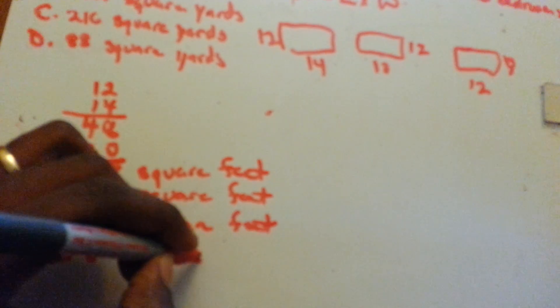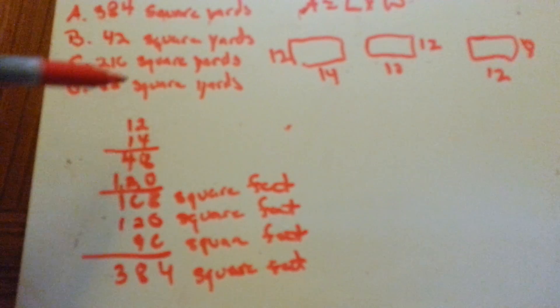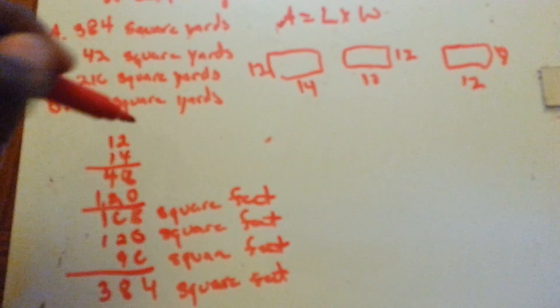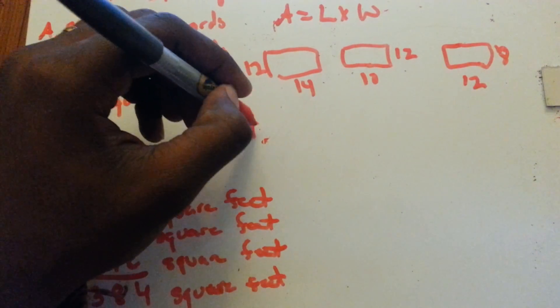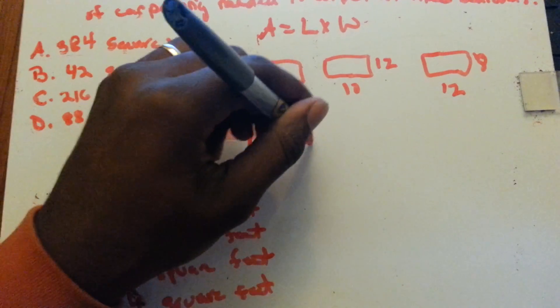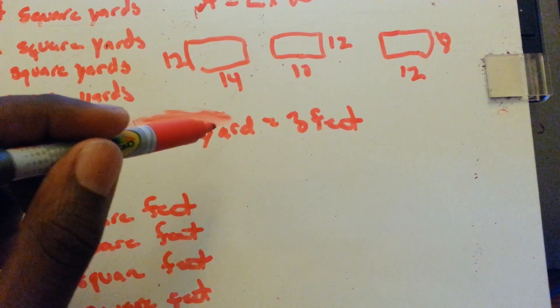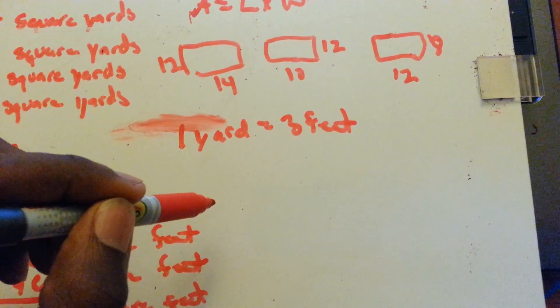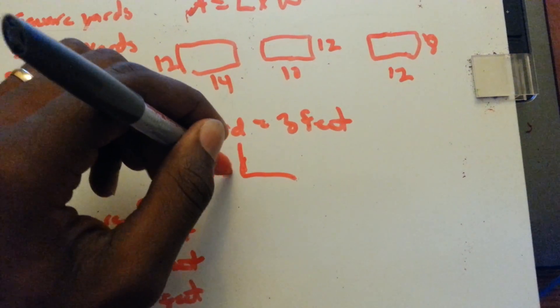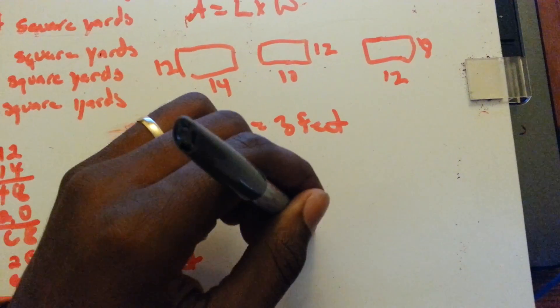Now, we have square feet, and like I said, the answers are in square yards. To get from square feet to square yards, one yard equals three feet. So, we have three feet times three feet, which would be nine feet squared.